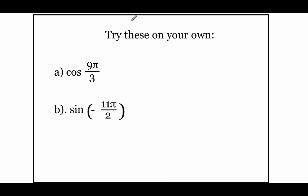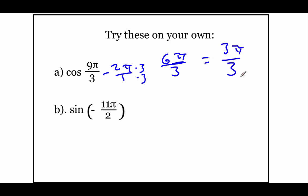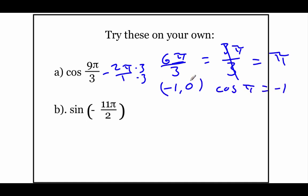A couple more problems. Cosine of 9π over 3 — that angle is too big, so we subtract a rotation. With a denominator of 3, we subtract 6π/3: 9π/3 minus 6π/3 equals 3π/3, which is just π. So this is the same as cosine of π. The ordered pair at π is (-1, 0), so the cosine of π is negative 1.